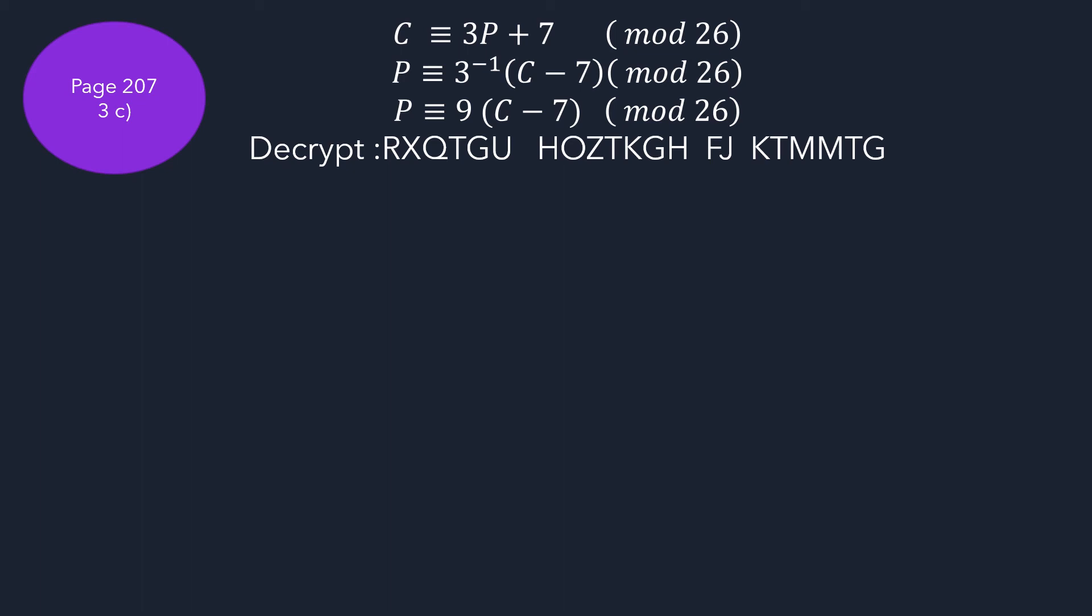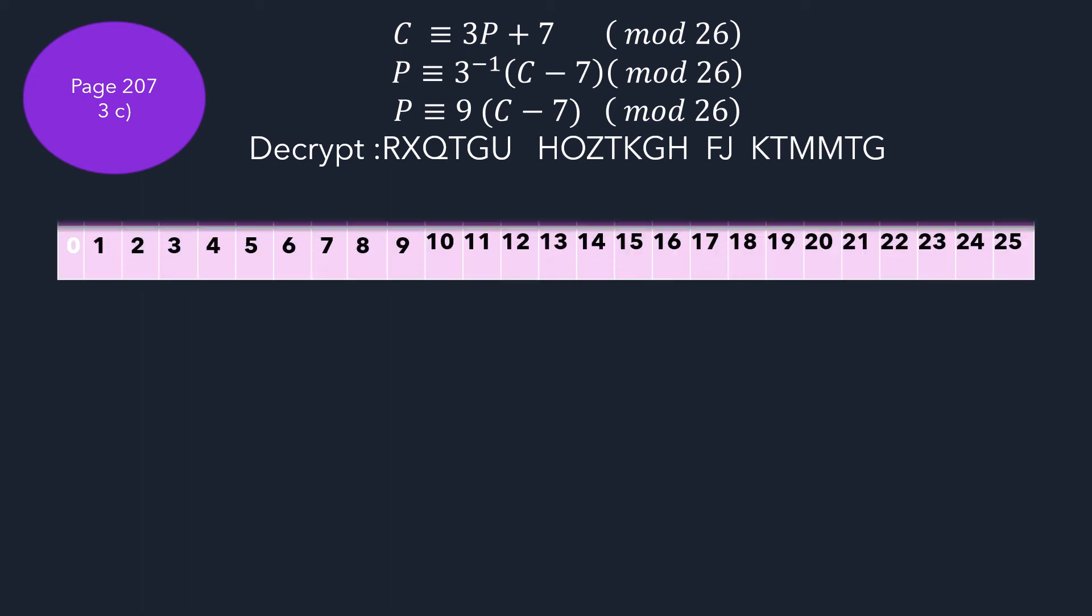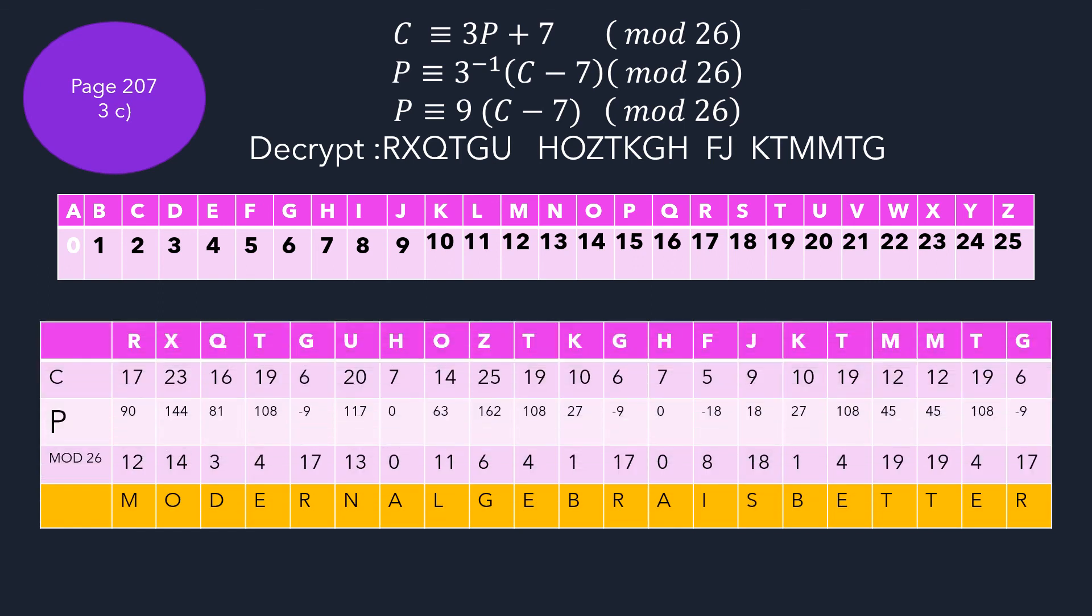We are going to decrypt this message. So using the numerals, we can write down the value for P. And the C values are there, so you can get the value for P from this, and using modular arithmetic, we can find the letters of the plaintext value. So it says MODERN ALGEBRA IS BETTER.